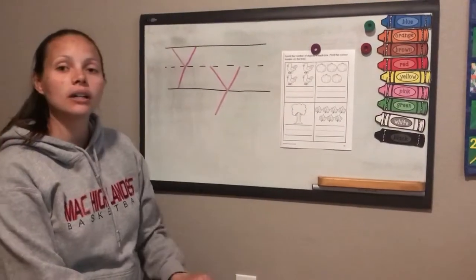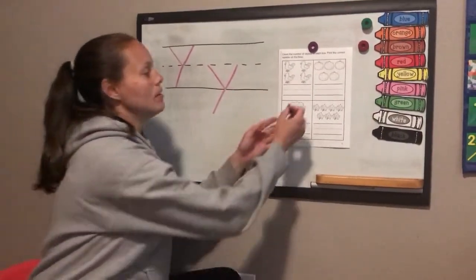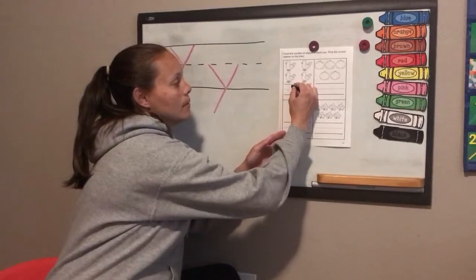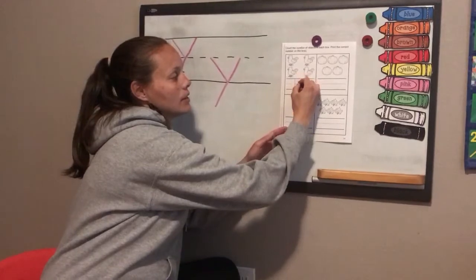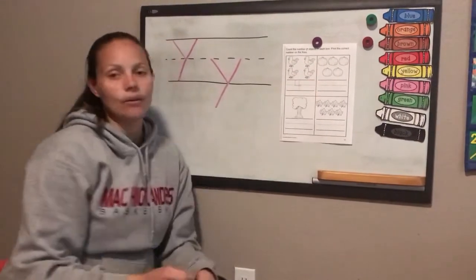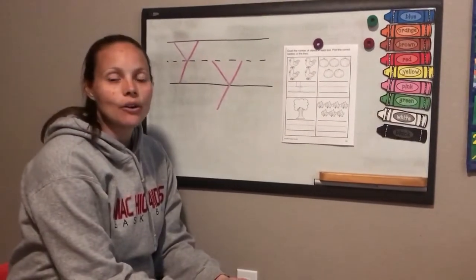Now we need to write a four down here. So let's see how we do that. Go down, across, pick up, and then start from the top and go down. There you go. Go ahead and write your four.